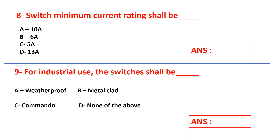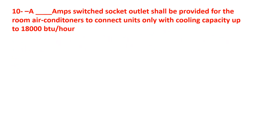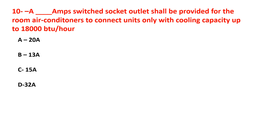Question number 10: A [blank] ampere switched socket outlet shall be provided for room air conditioners to connect units only with cooling capacity up to 18,000 BTU per hour. Your answers are: a. 20 ampere, b. 13 ampere, c. 15 ampere, d. 32 ampere.